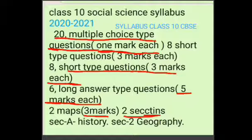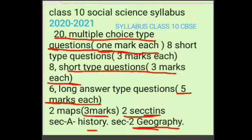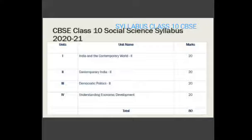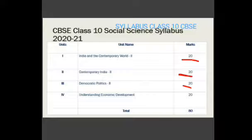There will be 2 sections in the map work — one section from History and the second section from Geography. When we talk about mark sharing from each subject, there will be 20 marks from History, 20 marks from Geography, 20 marks from Democratic Politics, and 20 marks from Economics. The total marks will be out of 80.